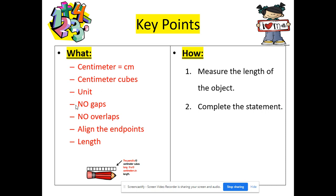We have to look for three rules that we're going to learn today. First rule: no gaps. Second rule: no overlaps. And last, we must always make sure to align the endpoints. These are three rules that we must remember today when we're measuring.